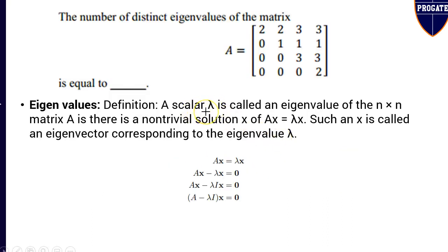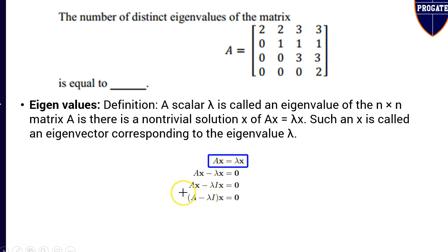A scalar lambda is called an eigenvalue of the n by n square matrix A if there is a non-trivial or non-zero solution x such that Ax is equal to lambda x. Such an x is called an eigenvector corresponding to the eigenvalue lambda. So, an eigenvalue is nothing but a scalar value such that Ax is equal to lambda x.